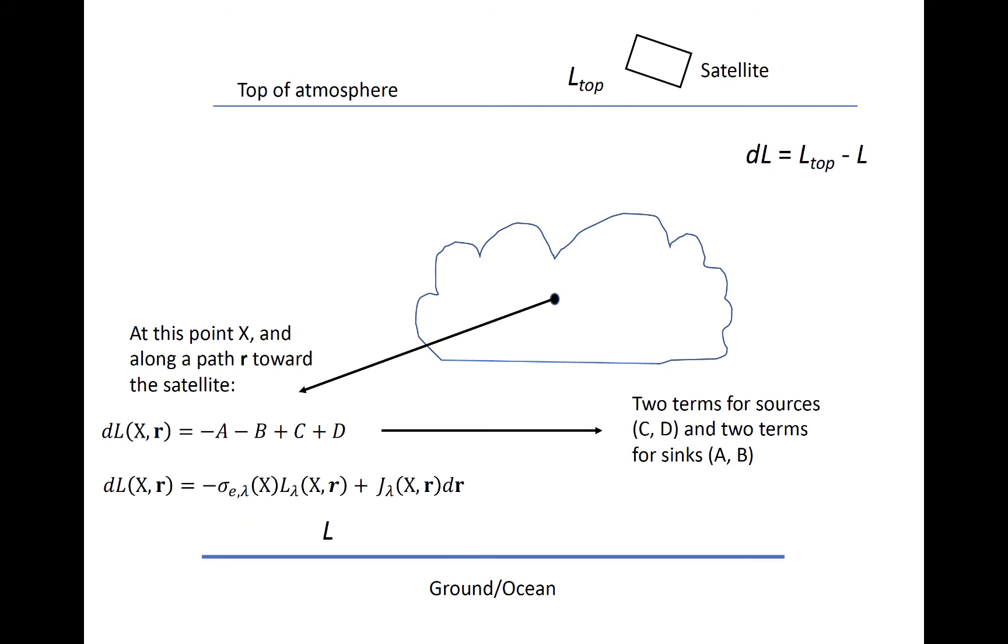Suppose you are interested in the change in radiance, or dL, at any point that we will call X, which in this case we have put in the cloud. The change in radiance is a function of location and the direction of the path toward the satellite, r.